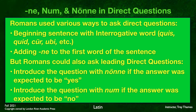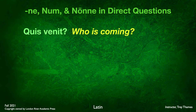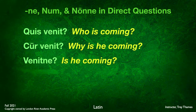Romans could also ask what we call leading direct questions, either anticipating a yes answer or a no answer. To anticipate a yes answer, they would introduce the question with nonne. If the expected answer is no, they would introduce the question with num. For example, quis venit — who is coming? Cur venit — why is he coming? Venitne — is he coming? These are all forms you've seen previously.